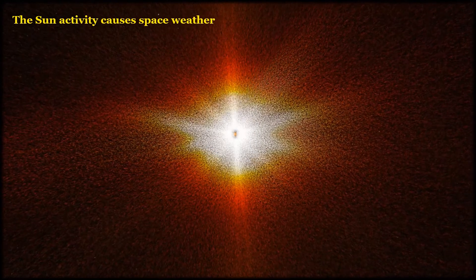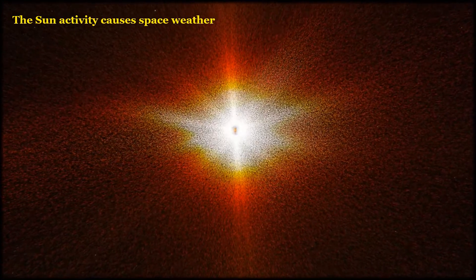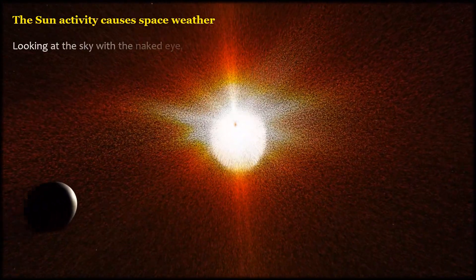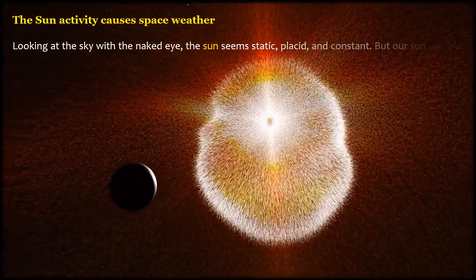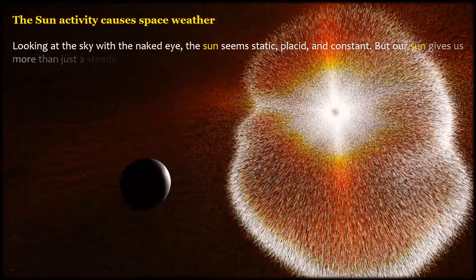The sun's activity causes space weather. Looking at the sky with the naked eye, the sun seems static, placid, and constant. But our sun gives us more than just a steady stream of warmth and light.